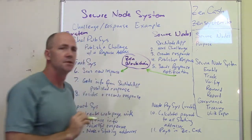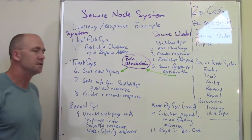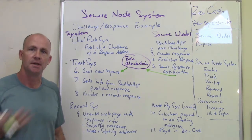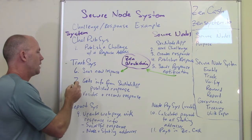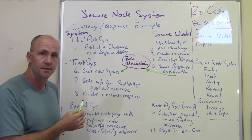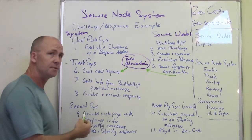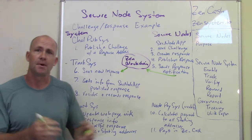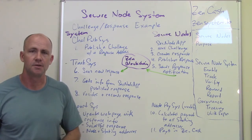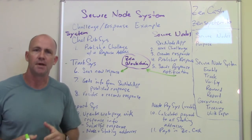So it publishes the response, and then it tells the Zen secure node system, hey, I've published my response. Over here we've got the tracking system — that's the one that receives all those responses. This tracking system is going to see that there's a new response sent to the private address of the tracking system. Then it opens that memo field and sees what URL it's supposed to go to to get the response. It goes over to the secure node app and gets it from that port in JSON format. Then it's going to validate that the response has the correct information — that it's encrypted, that it can decrypt it, and that it's got the right address from the correct transaction number. Then it records it, basically collecting all the different responses from hundreds or thousands of different secure nodes.